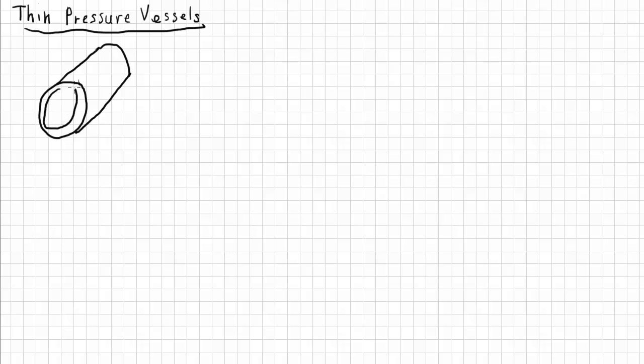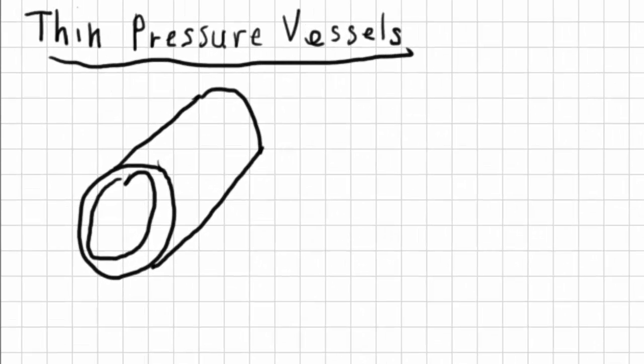If we look at a cylinder, I'm just going to draw half the cylinder here. We have in here a certain outer diameter. Here we've got an inner diameter and a wall thickness t. Inside we have a pressure p.